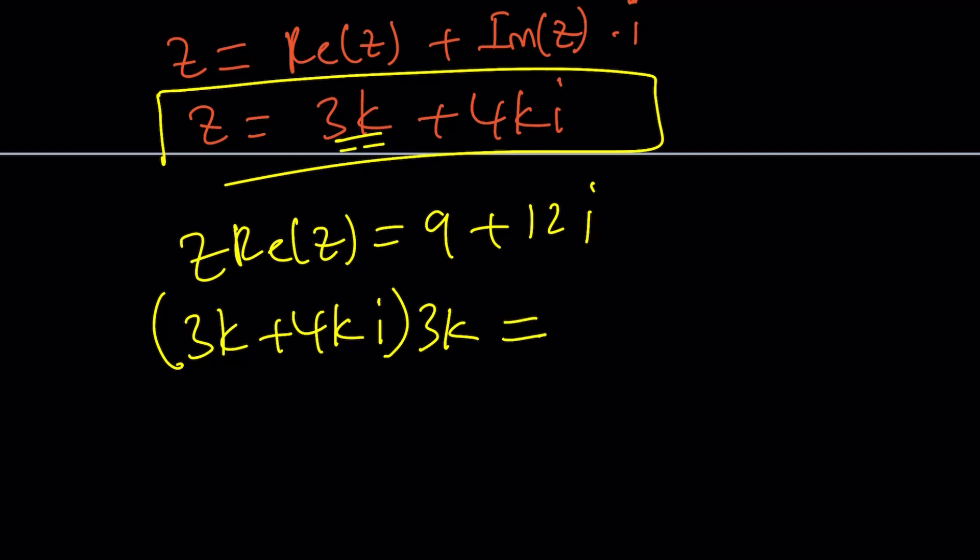And that should equal 9 plus 12i. So the main difference between the first and the second method is here we only have one variable, which is k. Why? Because we were able to get the ratio of a to b.